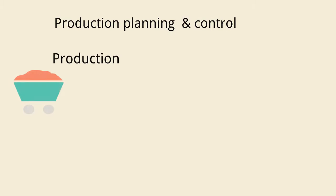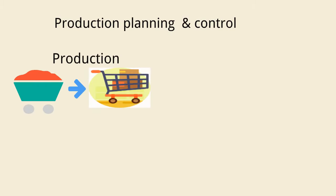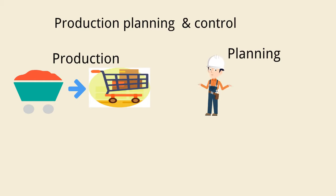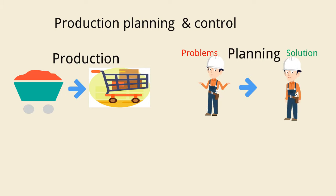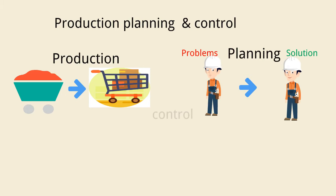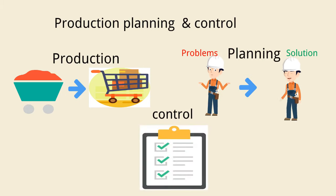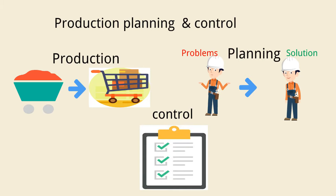Production is the transformation of raw material into finished goods. Planning looks ahead, anticipates possible problems, and decides in advance as to how the production is carried out in the best way. And control makes sure that the programmed production is constantly maintained.